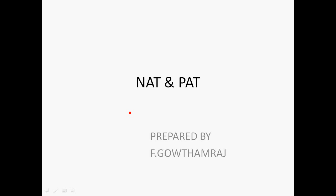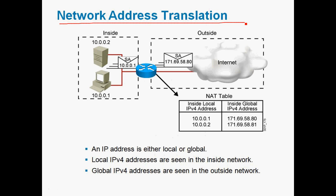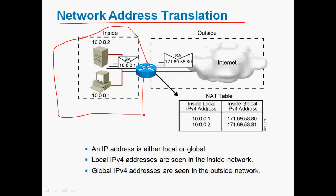Let's look at network address translation. In this diagram, this is an organization network. In an organization network we use private IP addresses — here we can see 10.0.0.1 and 10.0.0.2, both are private IP addresses of Class A range. This router is connected to the internet service provider. In this router we configure the NAT protocol, so a packet from 10.0.0.1 is processed through this router and automatically changes into the public IP address 171.69.58.80.